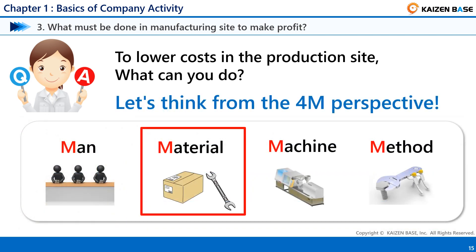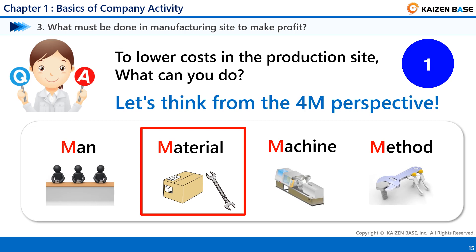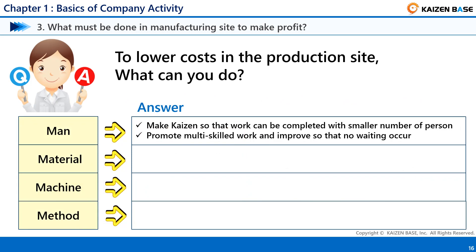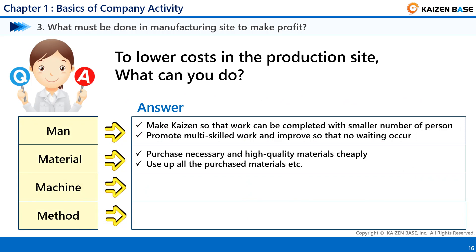Next, from the perspective of Material: purchase necessary and high-quality materials cheaply, and use up all the purchased materials. These are things to lower cost from the perspective of materials.